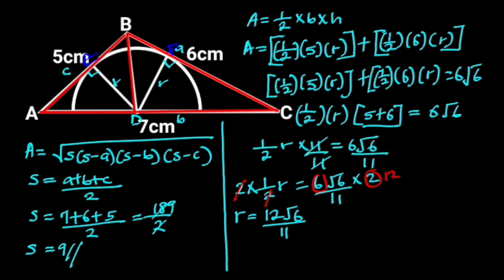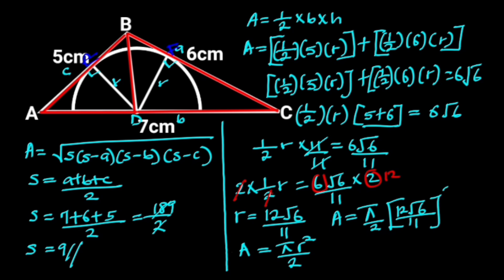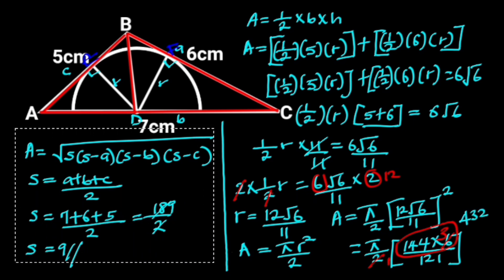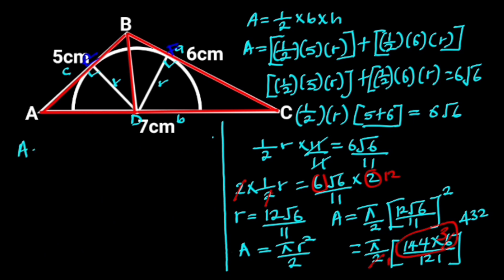Now we have the radius of the semicircle. We can find the area of the semicircle. The area of a circle is πR², so since it is a semicircle, the area will be πR² divided by 2. Substituting the value of R gives us π over 2 times (12√6 over 11) squared, which simplifies to π over 2 times 144 × 6 over 121. Since 6 divided by 2 is 3 and 144 times 3 is 432, the area of the semicircle is 432π over 121 square centimeters.